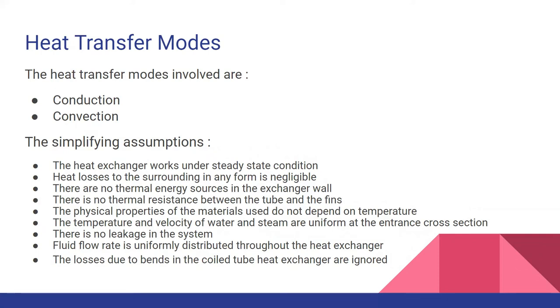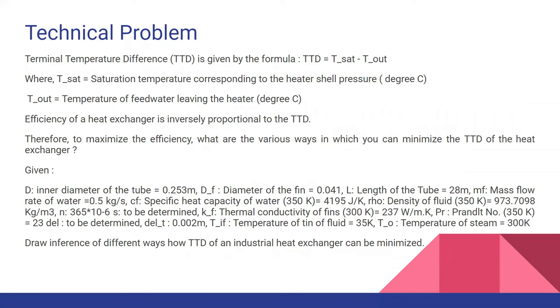While seeing the solution, we'll understand why these assumptions are an important part of our problem. Finally, stating the problem in a technical manner. What we have to find is terminal temperature difference, that is the TTD given by the formula T_sat minus T_out. We have already discussed what T_sat and T_out are. And the work that we have to do is we know that efficiency of a heat exchanger is inversely proportional to TTD. So, somewhere or the other, if we reduce the TTD, we can maximize the efficiency.